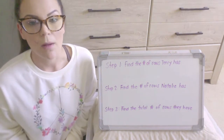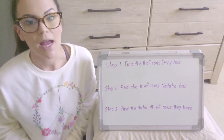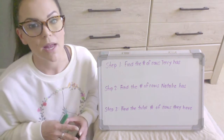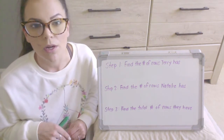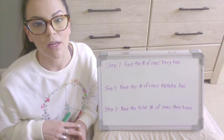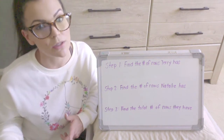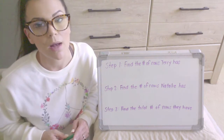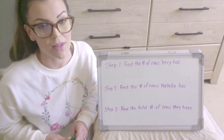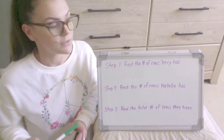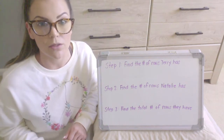Today the word problem we're working on has Terry and Natalie, and they're going to be taking their model cars and putting them into equal rows. But they don't want to know how many rows Terry has by himself or Natalie has by herself — they want to know how many rows Terry and Natalie have all together. So in order to figure that out, I'm going to have to do three separate steps to get to my final answer.